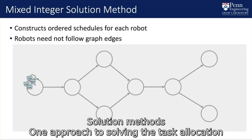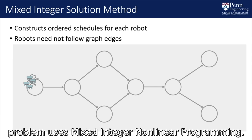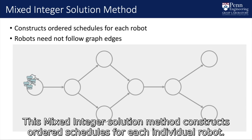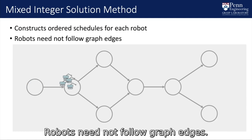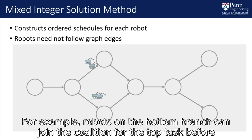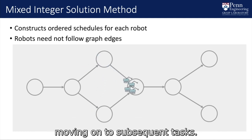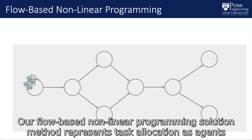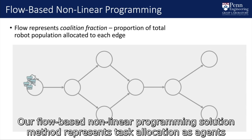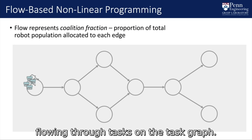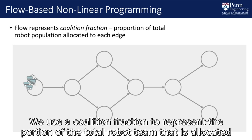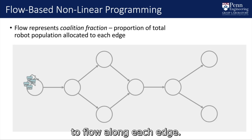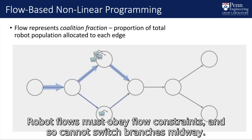One approach to solving the task allocation problem uses mixed integer nonlinear programming. The mixed integer solution method constructs ordered schedules for each individual robot, and robots need not follow graph edges — for example, robots on the bottom branch can join the coalition for the top task before moving on to subsequent tasks. We also introduce a flow-based nonlinear programming solution method that represents task allocation as agents flowing through tasks on the task graph. Robot flows must obey flow constraints and so cannot switch branches midway.